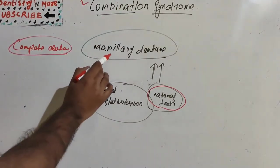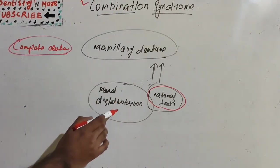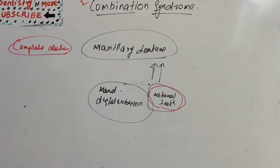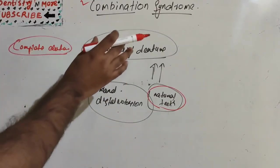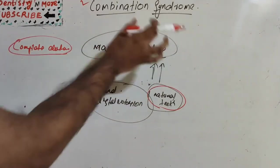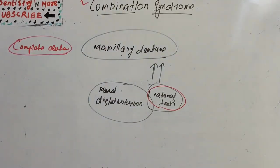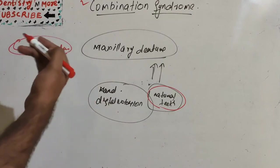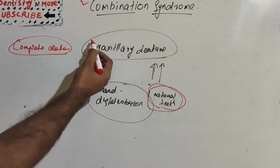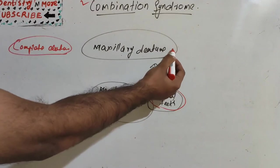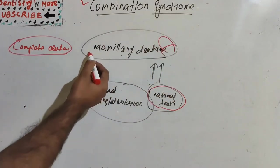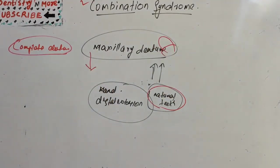So what happens in combination syndrome? First, there is loss of bone from the maxillary anterior edentulous ridge. Then there is downgrowth of maxillary tuberosity. Resorption happens in the anterior region, and papillary hyperplasia of the tissues of the hard palate occurs.